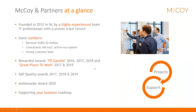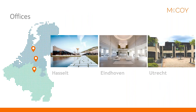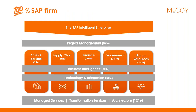McCoy and Partners is a consulting company founded in 2012 in the Netherlands, active in Belgium and the Netherlands. We are more or less 160 consultants and rapidly growing. We have been rewarded for our work and projects several times. We have three offices in Hasselt, Eindhoven, and Utrecht. As a company, we try to cover every topic in the SAP Intelligent Enterprise — teams focused on project management, sales and service, supply chain, finance, and of course a team focused exclusively on SAP IBP.